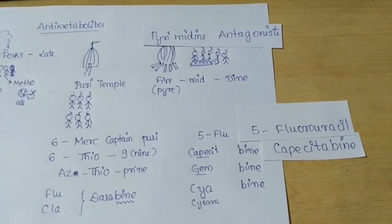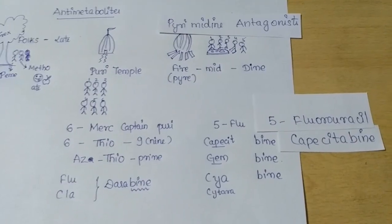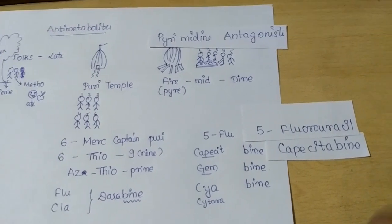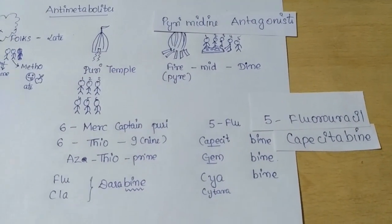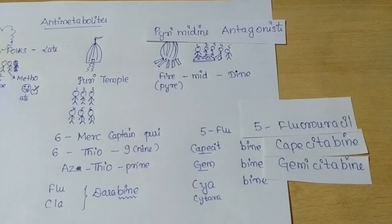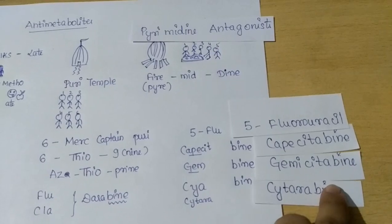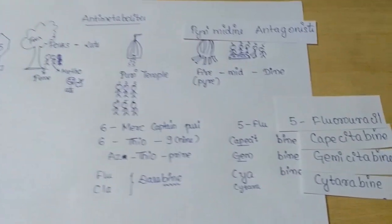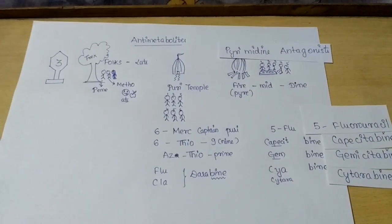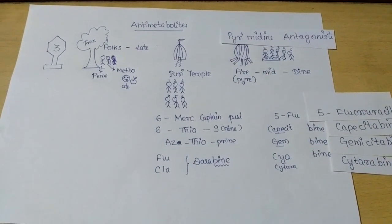So the other drugs are: 'capacity' gives us capecitabine — since 'bine' is common for all of them. 'Gems' or the gems chocolate gives us gemcitabine. And 'see ya,' 'citra,' or 'sayonara' gives us the drug cytarabine. So friends, we are done with the third part of the cytotoxic drugs. Thank you for watching.